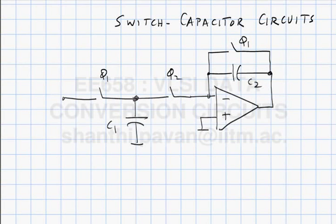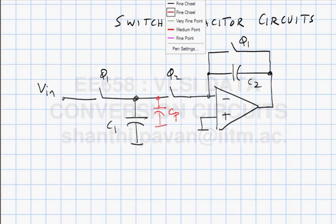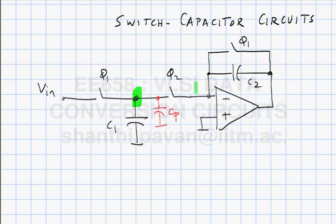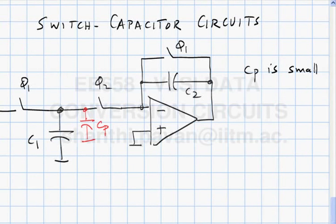Any node in a circuit will always have parasitic capacitance to ground. It may also have parasitic capacitance to other nodes, but it is always accompanied by a parasitic capacitance CP to ground. Typically the parasitic capacitance depends on the length of the wire connecting that node. CP is hopefully small and unknown a priori.